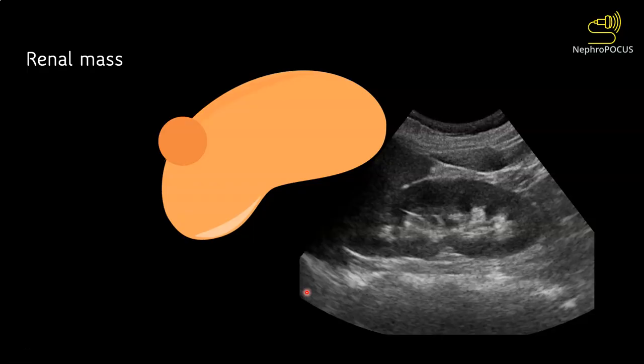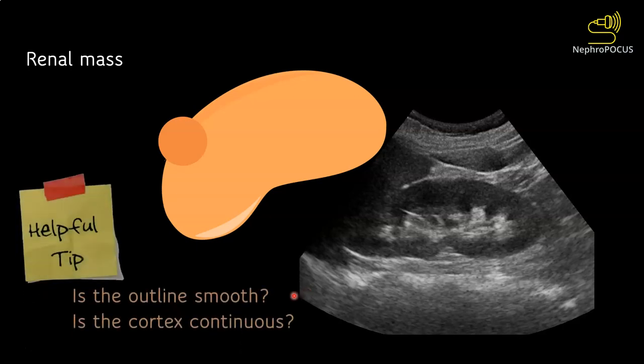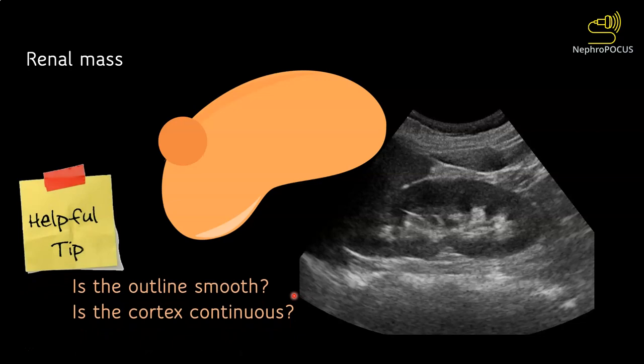Generally when you do kidney POCUS, the primary intent is to exclude hydronephrosis. But because most of these patients do not get a formal radiology-performed ultrasound after POCUS, it would be prudent to exclude any incidental masses. To do that, spend a couple of minutes and ask yourself these two questions.